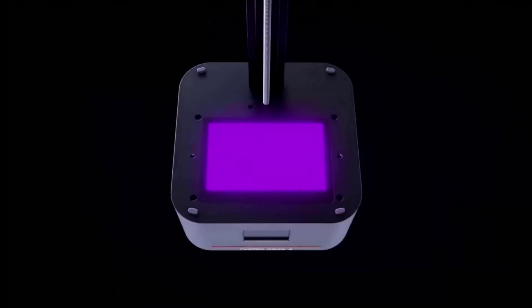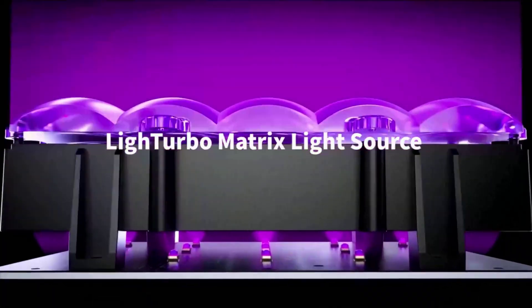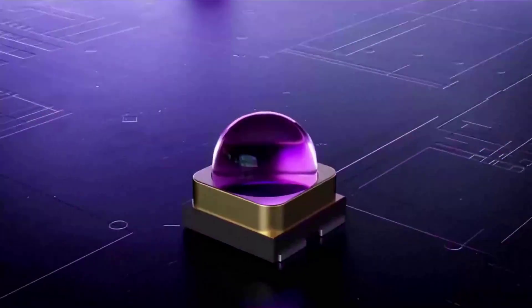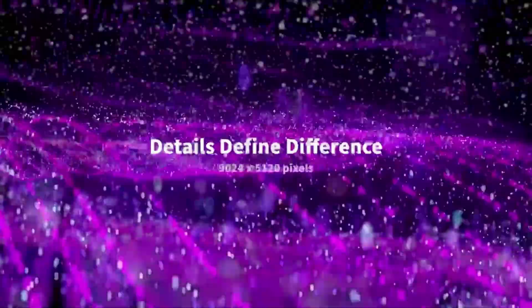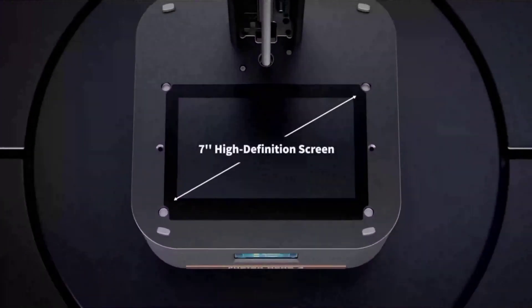Anycubic's light-turbo-matrix UV light system provides stable and uniform exposure across the entire print surface. This greatly reduces visible layer lines, giving you smoother models with professional-grade finishes.